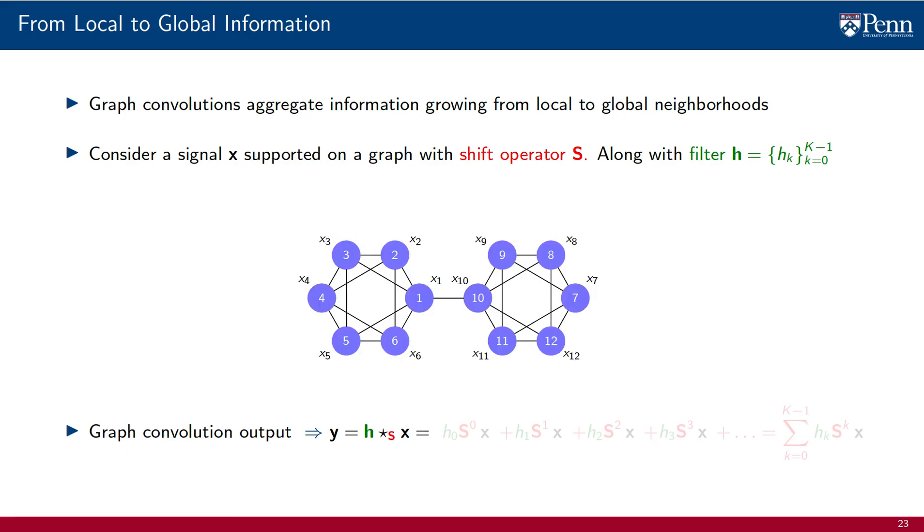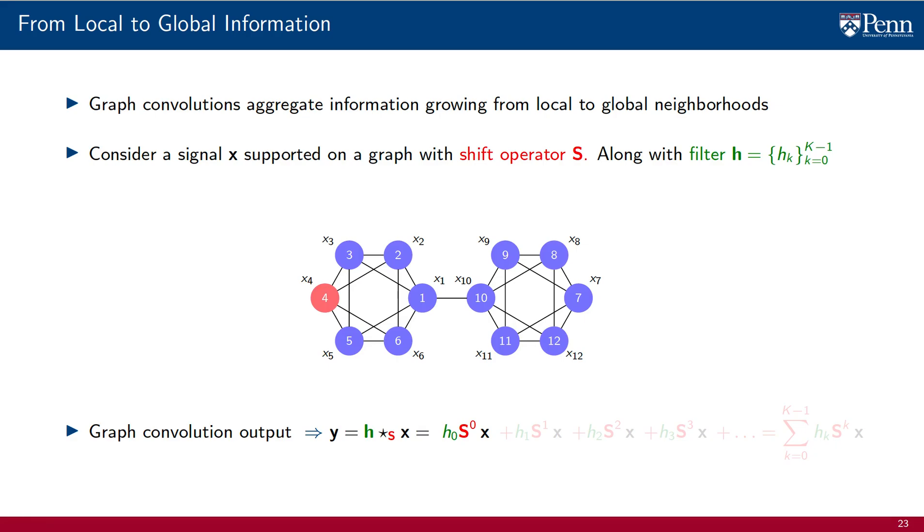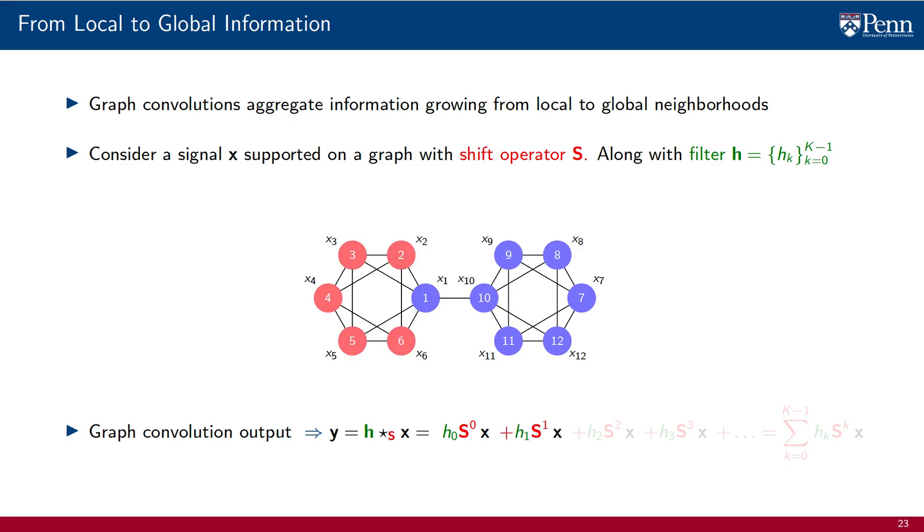We begin with an illustration of the graph on which the signal components are supported on individual nodes. To compute the output of the graph convolution, we begin with the graph signal x itself, which we scale with coefficient h_0. We highlight the signal value at node 4. To the signal x, we add the diffusion S times x, which we scale with coefficient h_1. This results in the convolution output at node 4 being affected by all of its one-hop neighbors.